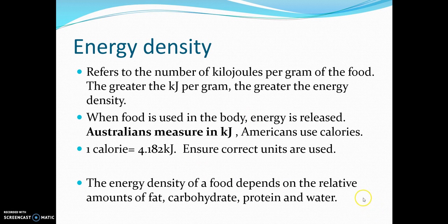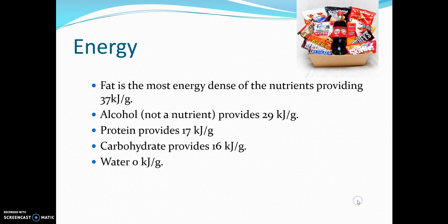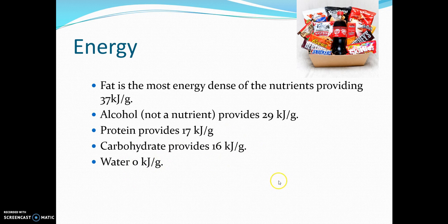The energy density of food depends on the relative amounts of fat, carbohydrates, protein, and water. Fat is the most energy dense at 37 kilojoules per gram. Alcohol, which is not a nutrient, provides 29. Protein provides 17 kilojoules per gram, carbohydrates provide 16, and water provides zero kilojoules.